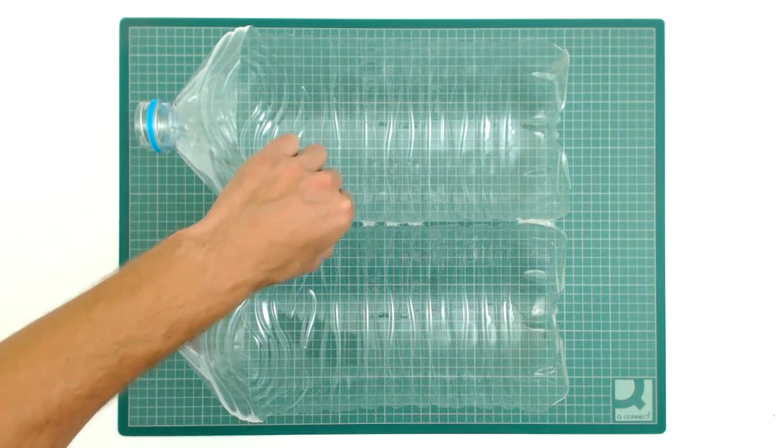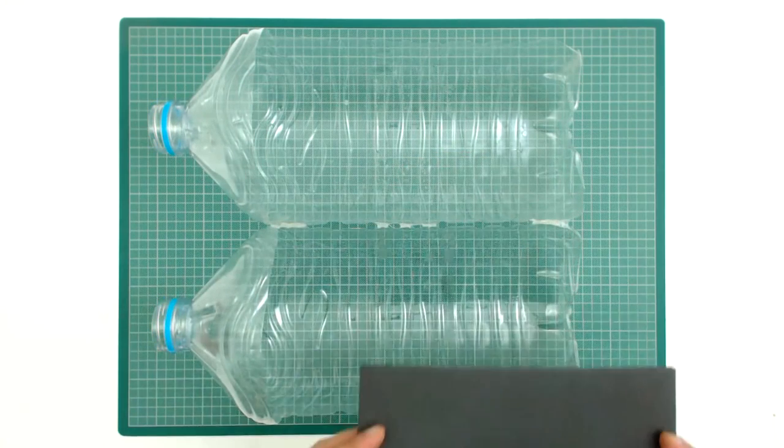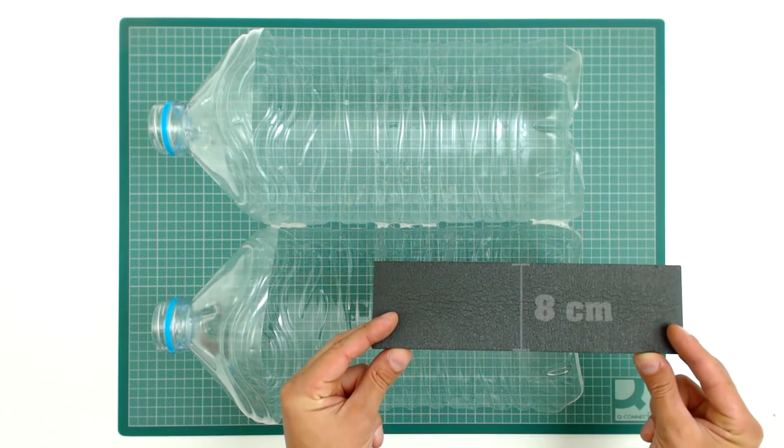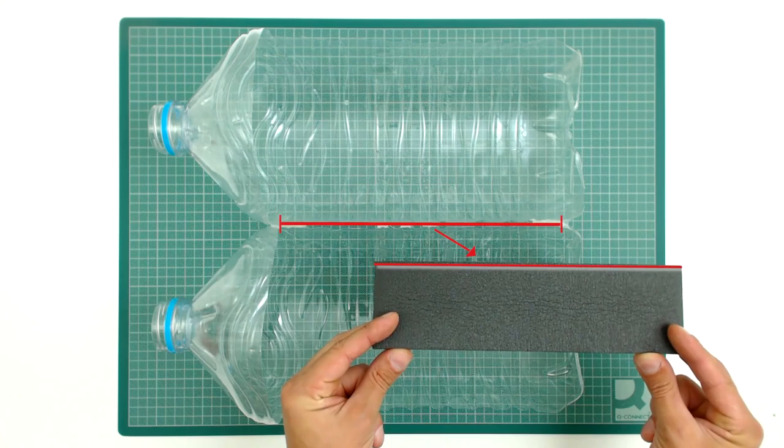To reinforce the joint, it is necessary to glue the following pieces. Glue into the joint this piece of mat, 8cm wide and the length of the water bottles.